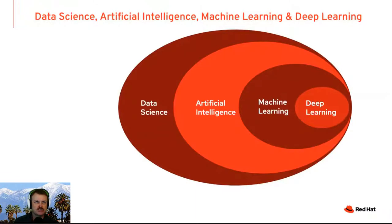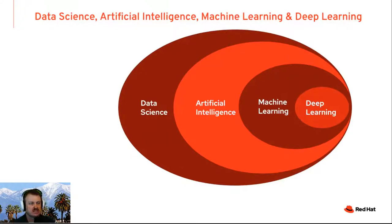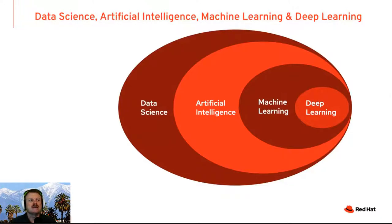A word here on data science, artificial intelligence, machine learning, and deep learning. Deep learning is a subset of machine learning, which is a subset of artificial intelligence, which is a subset of data science. For most of what I'm going to talk about here, I'm going to focus on machine learning — just because I think it's the easiest in many cases to connect back to business and is the most widely applicable currently.